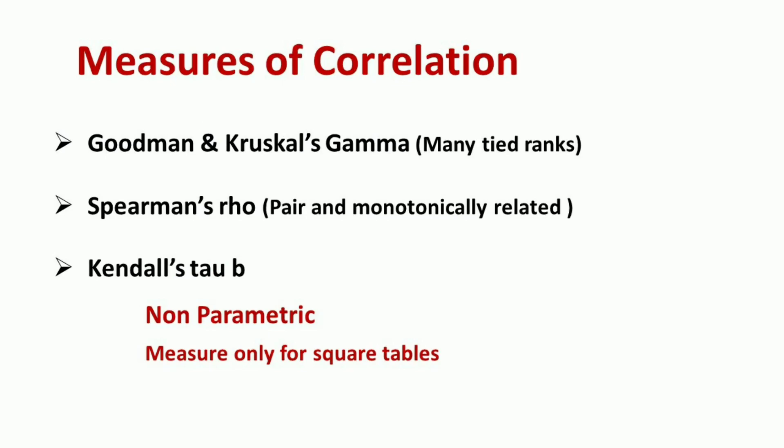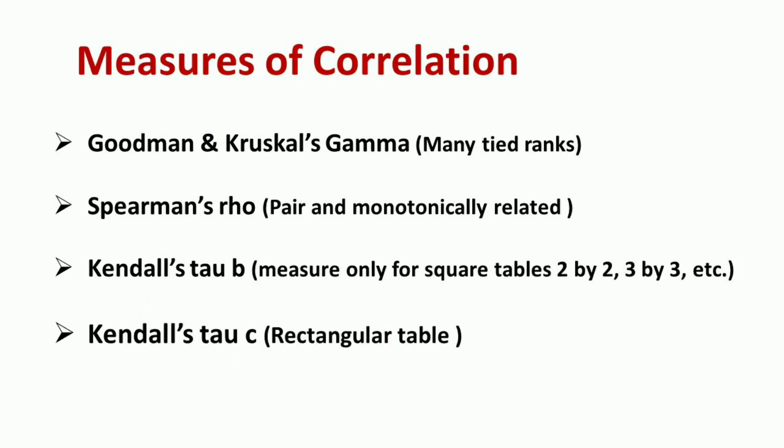The third measure of correlation is Kendall's Tau B. Kendall's Tau B is a non-parametric measure and the best alternative to Spearman's rank correlation, measuring the association between two ordinal variables. It is most appropriate for a square table in which the number of rows and number of columns are equal. Another measure of correlation is Kendall's Tau C, which is usually used for a rectangular table in which the number of rows is different from the number of columns.